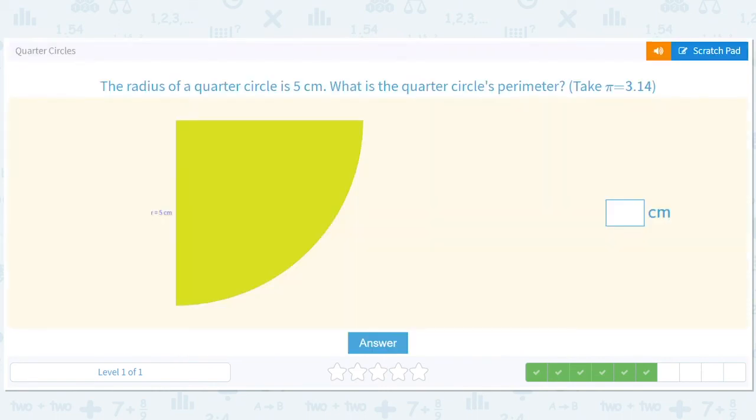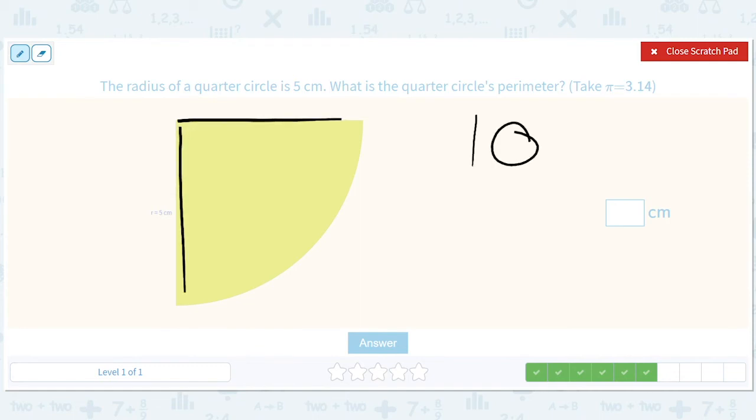Okay. The radius of a quarter circle is 5 centimeters. What is the quarter circle's perimeter? Okay. So we end up with 5 plus 5, I'll put the 10 here. And then over here, this is 2 pi r which is 2 times pi times 5 divided by 4. So that's 10 pi, right? So that's 3.14.